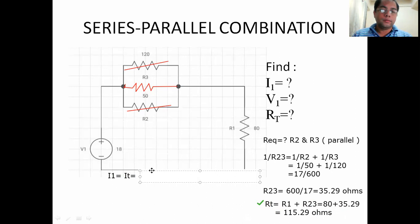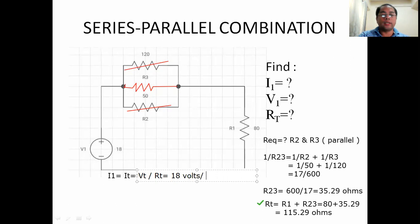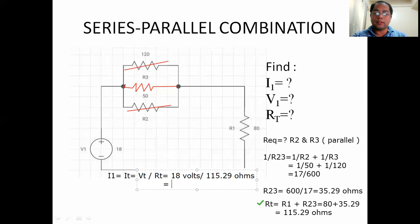So R23, after combining these two will now become this 35.29 ohms, which is in series to R1. That's why you get R total, you add them. So this is the thing that gives us the knowledge to add them because they are in series. Now, our I total will be equivalent to Vt divide by Rt. And Vt over Rt is equal to, so the total voltage is 18 volts, then we divide it with Rtotal, which is 115.29. And that gives us, so that's a small value. 18 divided by 115.29, that gives me 0.16 ampere.